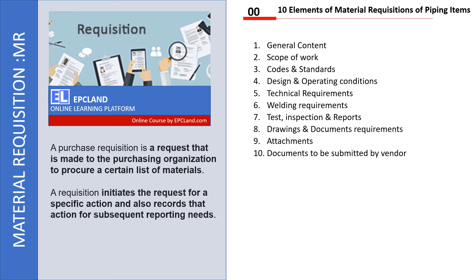This requisition initiates the request for a specific action. For example, if we are talking about a valve — say a butterfly valve — we have to request our procurement team that this is our requirement, and they should start talking to vendors to get the desired valves. This is the first step, and any requisition will have a number of sections.